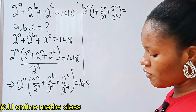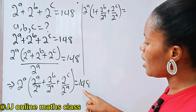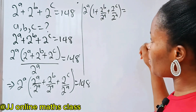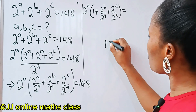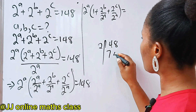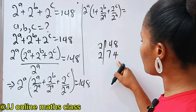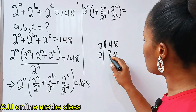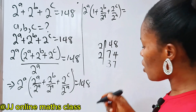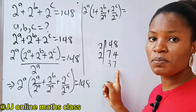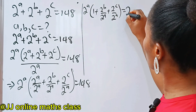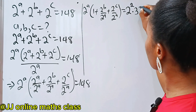Now let's factorize the right-hand side and bring out 2 to the power of something multiplied by something, just like we have on the left. If we factorize 148: 2 divides it to give 74, 2 divides again to give 37. So definitively we are going to have 2 to the power of 2 multiplied by 37. So this is equal to 2 to the power of 2 multiplied by 37.